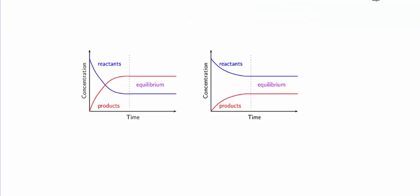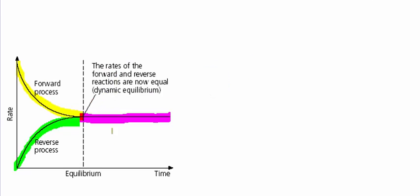These graphs here illustrate the change in concentration over time of reactants and products in a reaction. I just want you to take note of how that is different to the graph we were looking at before, which was looking at the rate over time. In that graph we were looking at how the rate of the forward and reverse reaction decreases and increases until they are the same — we can see here at this point they are the same rate.